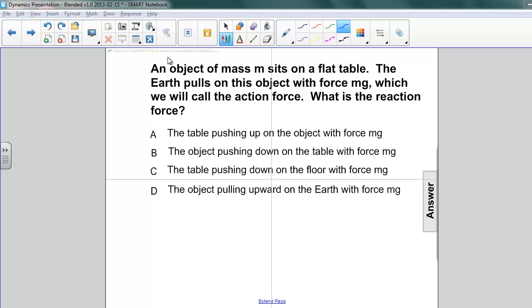Well, first of all, let's think about this. We've already got something pulling down on the object. The Earth is pulling down on the object. So if we're going to have a reaction force, it has to be in the opposite direction. Let's look at some of these answers.